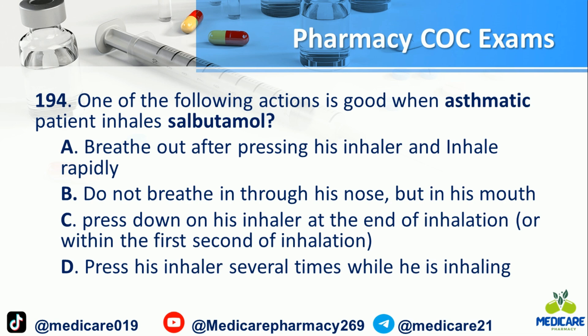Number 194: One of the following actions is correct when an asthmatic patient inhales salbutamol. A) Breathe out after pressing his inhaler and inhale rapidly. B) Do not breathe in through his nose but through his mouth. C) Press down on his inhaler at the end of inhalation or within the first second of inhalation. D) Press his inhaler several times while he is inhaling. The answer is B.